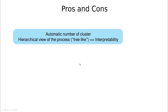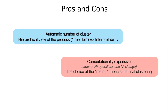To summarize the pros and cons: the best thing about hierarchical trees is the built-in automatic number-of-clusters feature and a hierarchical view of the process, which improves interpretability — you can think of the dendrogram like a decision tree learned from the data. The downside is computational expense: at each step you calculate n² distances, repeated until all elements are in one cluster, meaning n³ total operations.